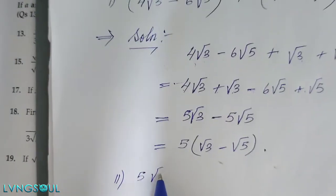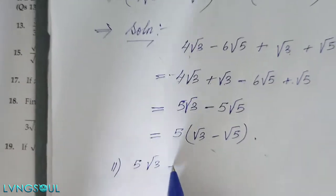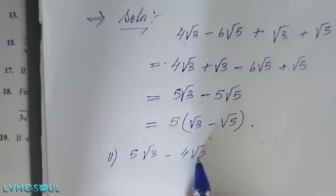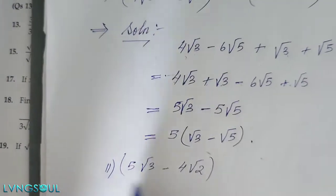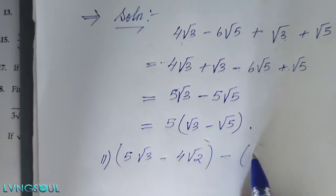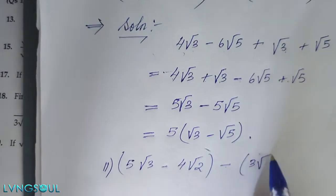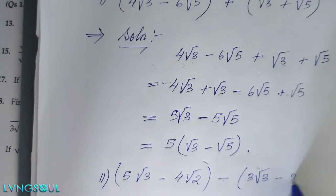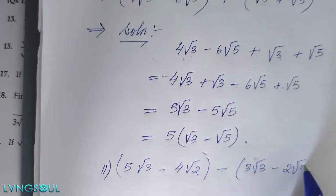Next problem: 5 root 3 minus 4 root 2 minus 3 root 3 minus 2 root 2.